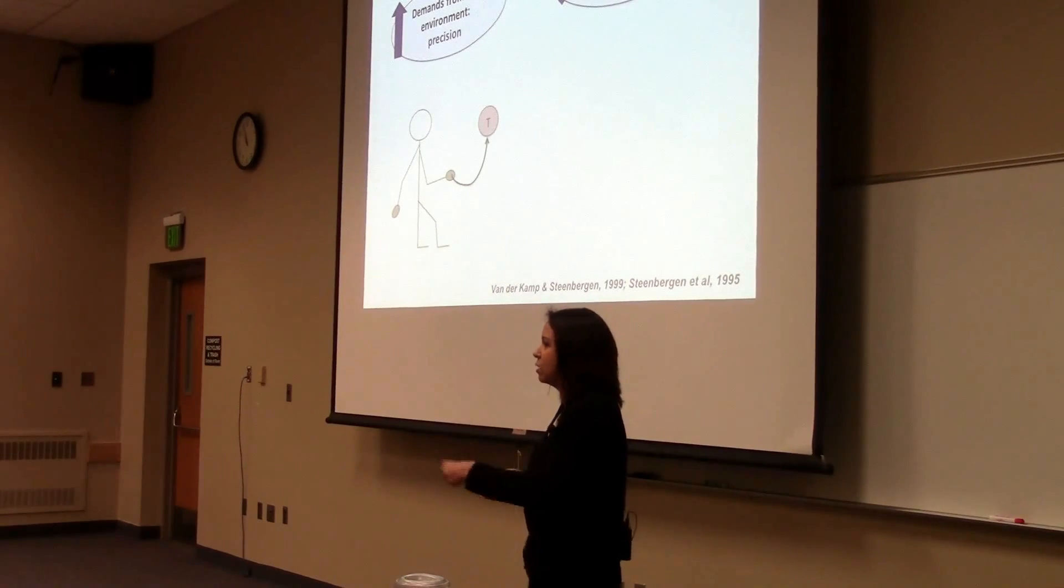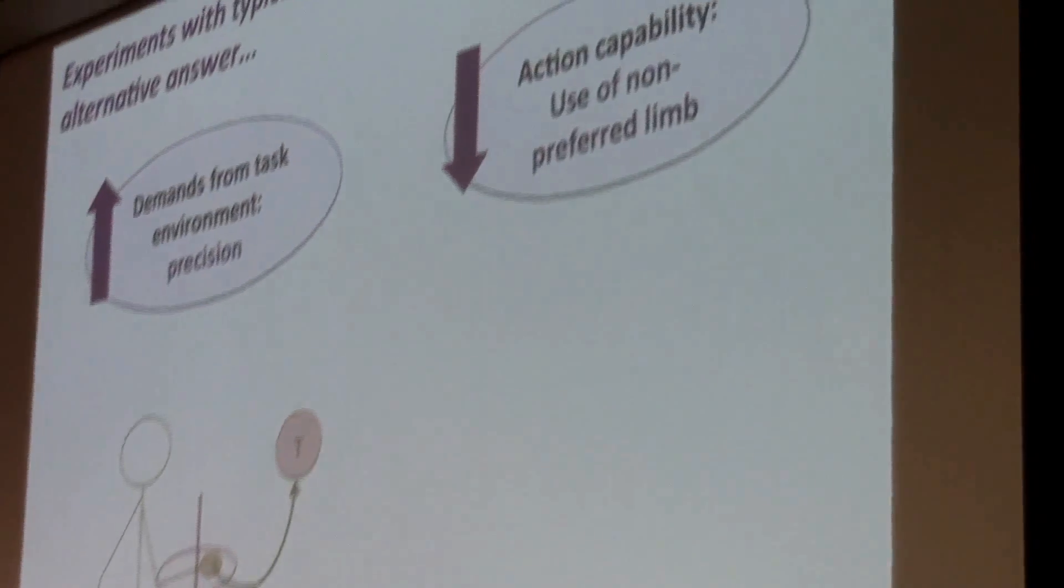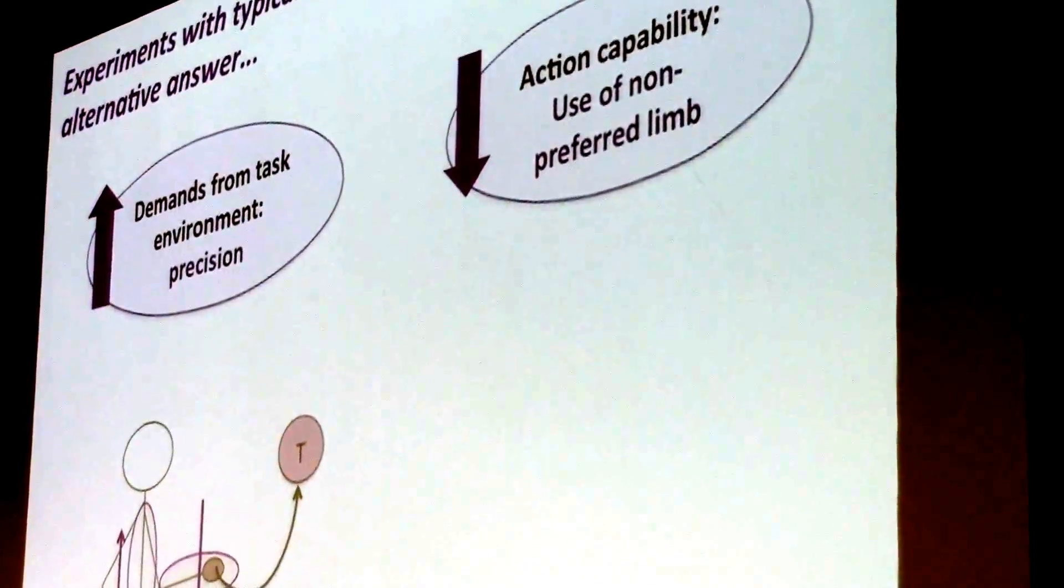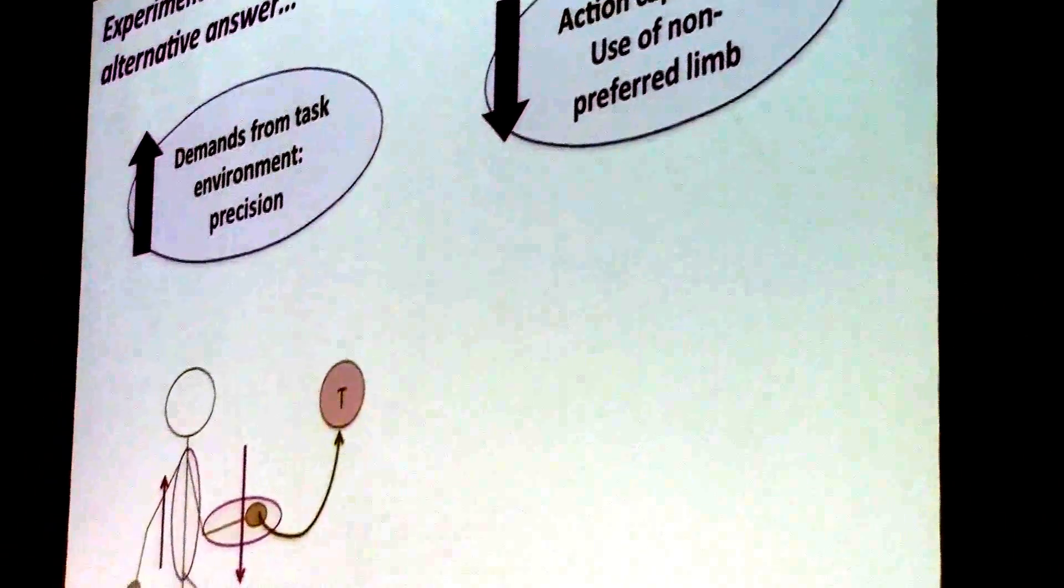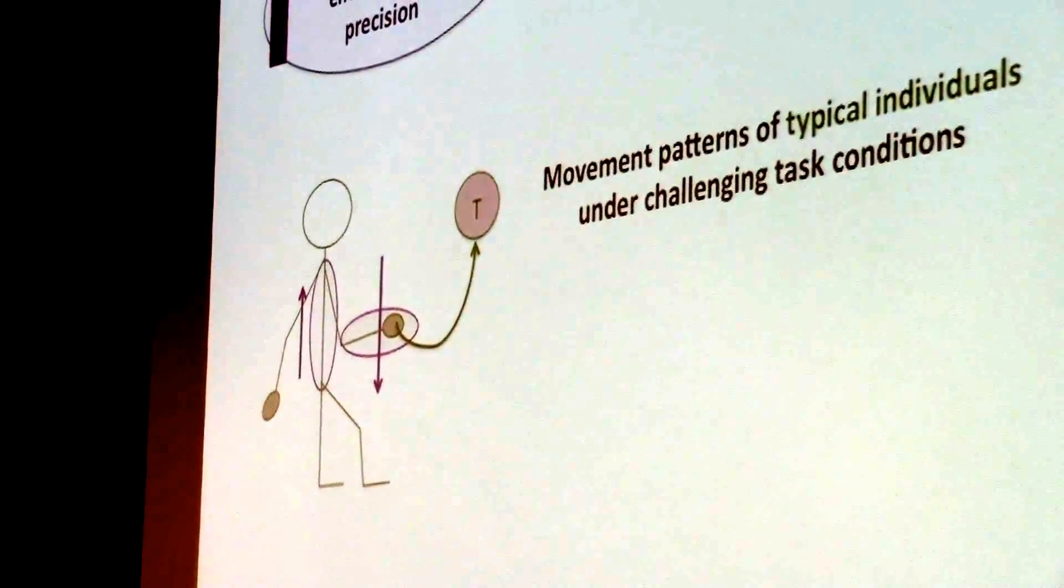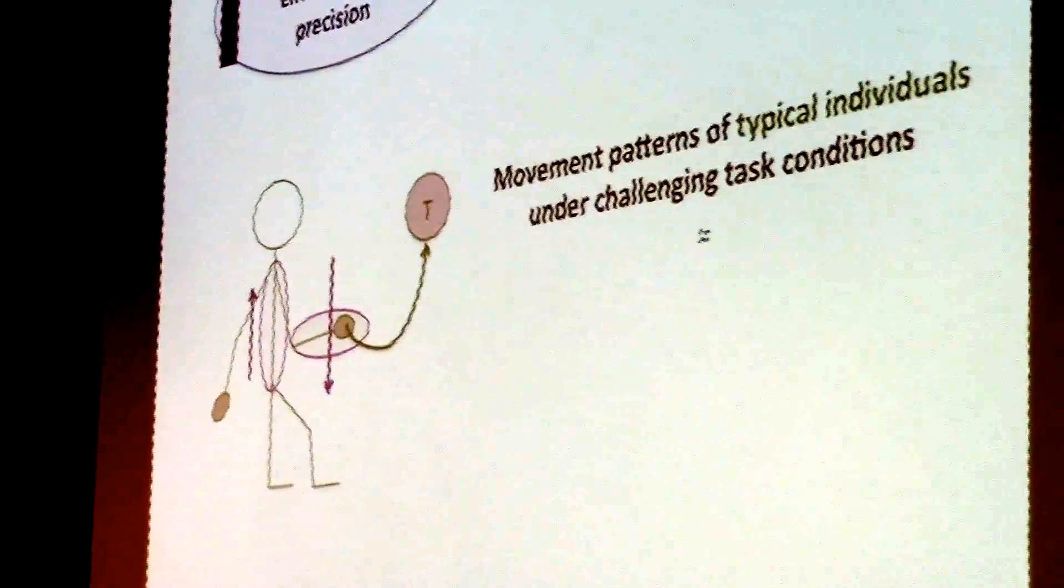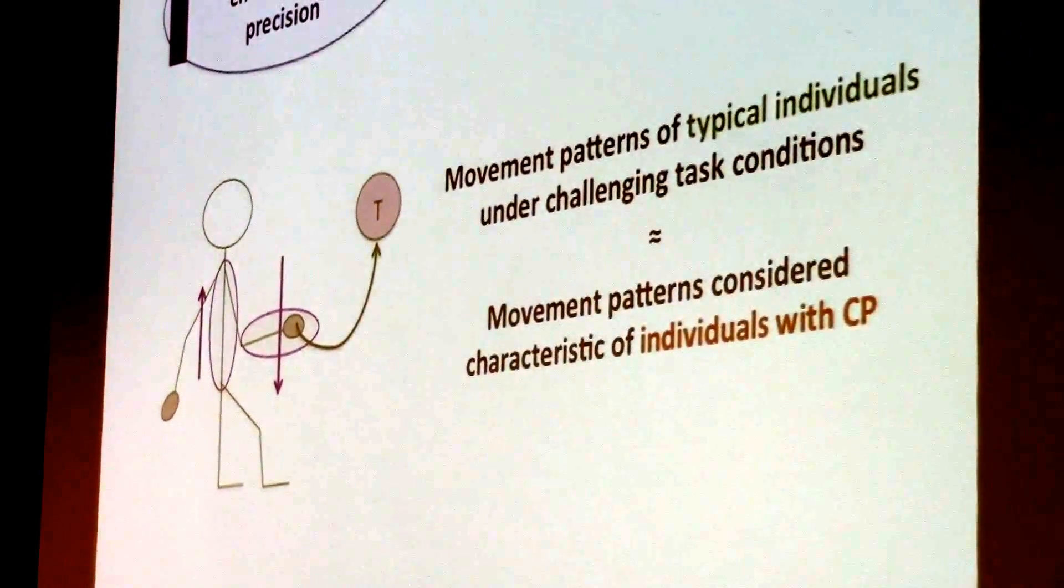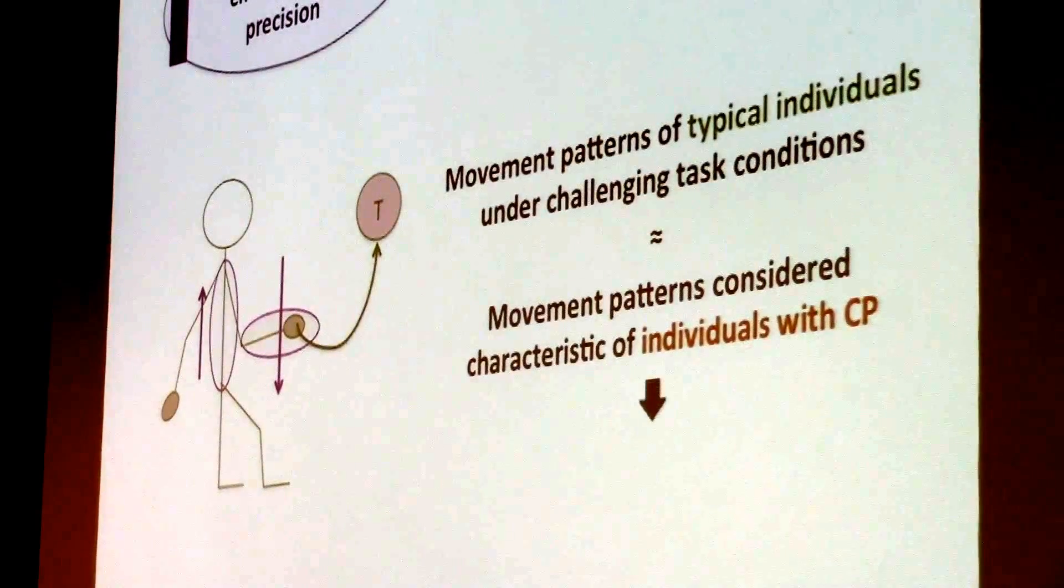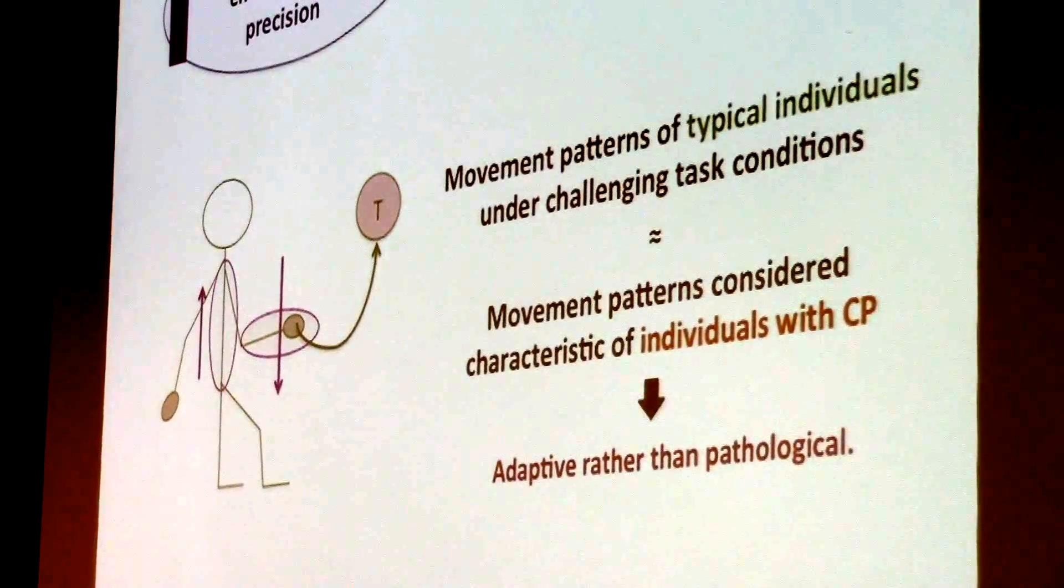You get reduction in movements at distal joints, such as the elbow and the wrist, and you get increases in movements of the shoulder and the trunk. So surprisingly, movement patterns show up in typical individuals in challenging situations that are quite similar to the movement patterns that are considered characteristic of individuals with cerebral palsy. So we have to consider here the possibility that these patterns are adaptive rather than pathological.